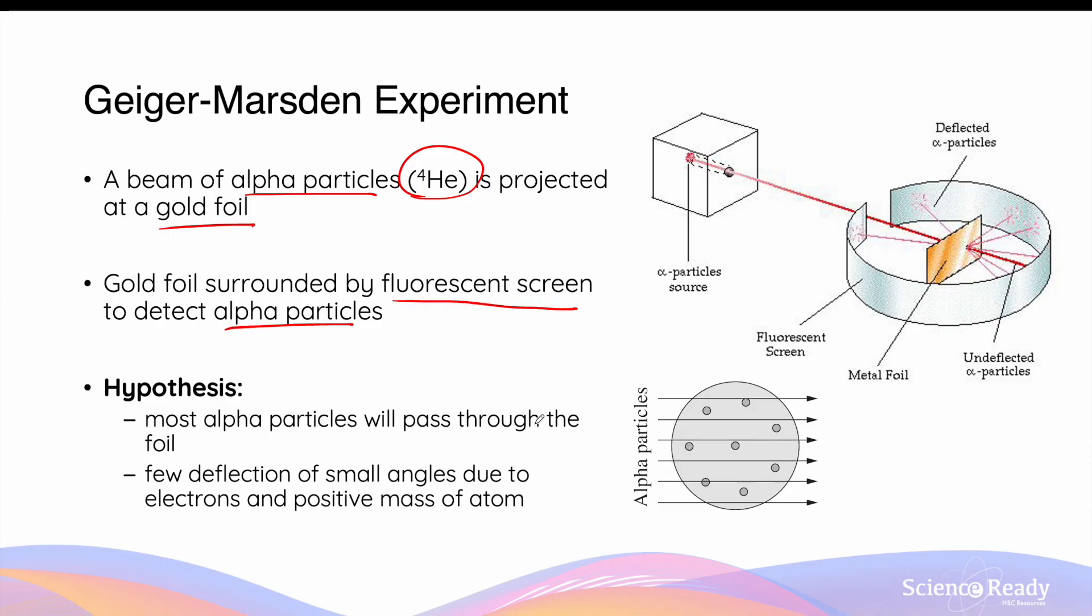Using Thomson's atomic model, a very simple hypothesis can be made for this experiment. Most alpha particles, if not all, should pass through the gold foil undeflected. That is, they can travel straight through without any deviation in the path. The prediction allowed for a few deflections at small angles due to the presence of electrons that may cause deflections of the alpha particles.